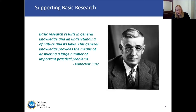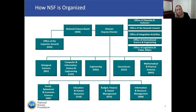Here's our organizational structure. You can see that we have our director, and within the office of the director, there are several offices that focus on cross-disciplinary or NSF-wide activities. The director is a member of the National Science Board, and our Office of the Inspector General reports to the National Science Board. Below that, you see the discipline-specific organizations, as well as in the bottom right-hand corner, Budget Finance and Award Management, and the Information Resource Management organization.